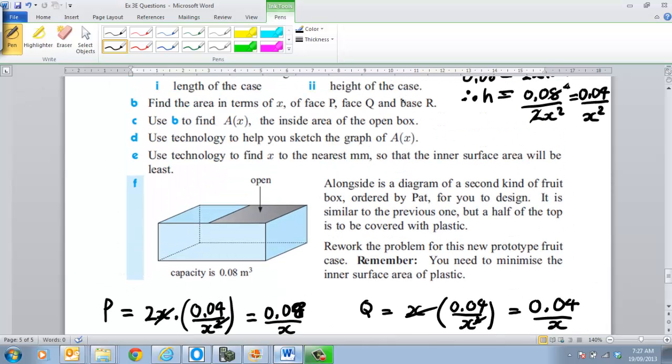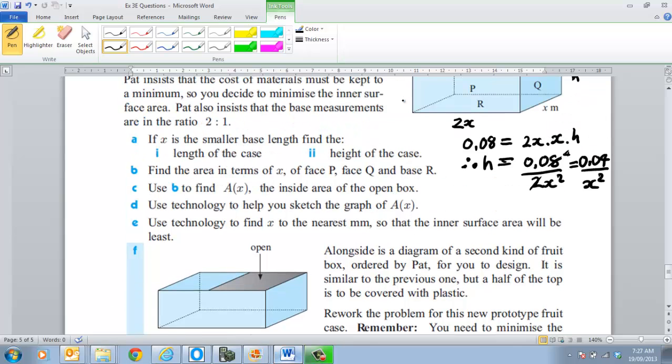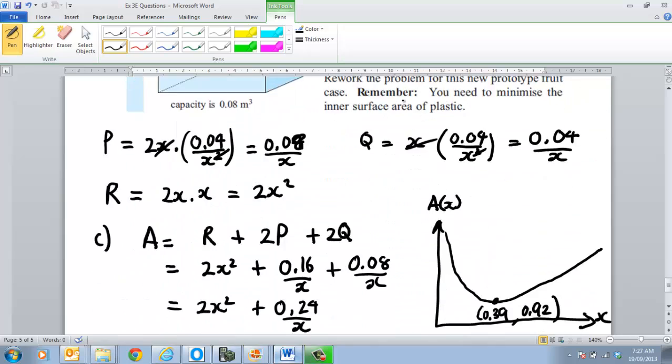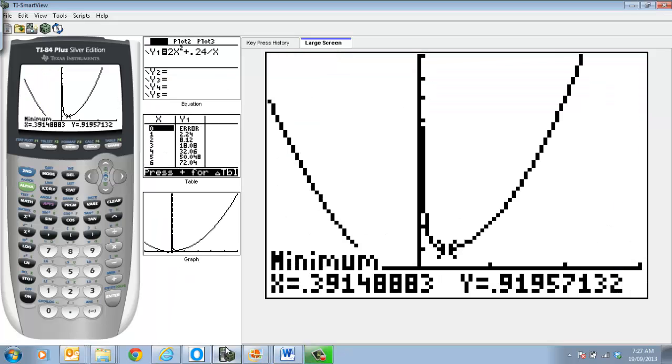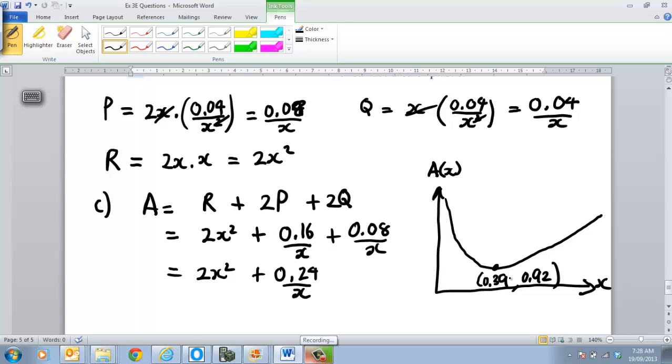So using technology, use that to find the value of x to the nearest millimetre. Alright, so that the inner surface will be at least, now I'm working in metres here. I don't think I've gone to enough units, have I, to the nearest millimetre. So I should be going to 3 decimal places here. And that will give me, so that's 0.391, isn't it? 0.9, we could probably say 0.92 is probably good enough there. Because you have to round up. So 0.92 and 0.391. So that's actually 391 millimetres is my x value. So therefore you need to identify that. So x is equal to 391 millimetres.